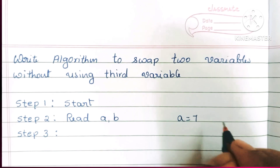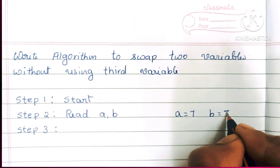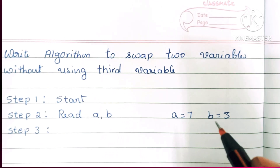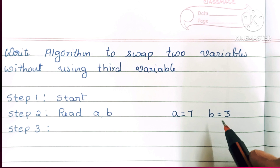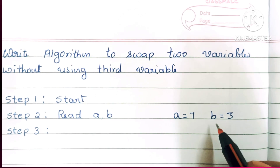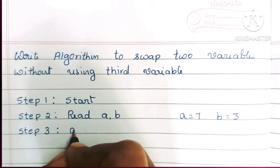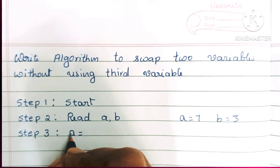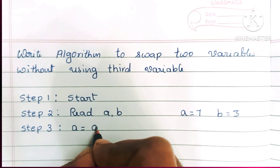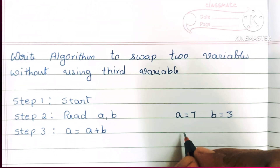Consider here a value is equal to 7 and b value is equal to 3. We have to interchange the values so that a becomes 3 and b becomes 7. In step 3 we calculate a is equal to a plus b.